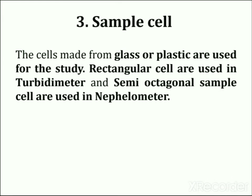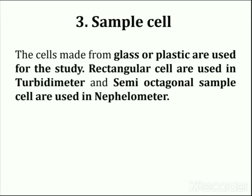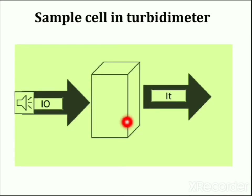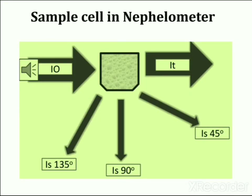The third important part of the instrument is the sample cell. These cells are made of glass or plastic. Rectangular cells are used for the turbidimeter, and semi-octagonal sample cells are used in the nephelometer. A cell with a rectangular cross section is preferred where measurements are to be made at angles other than 90 degrees, while semi-octagonal cells are widely used. Here, I₀ is incident radiation and IT is transmitted radiation. Semi-octagonal cells help in the detection of transmitted radiation at various angles.